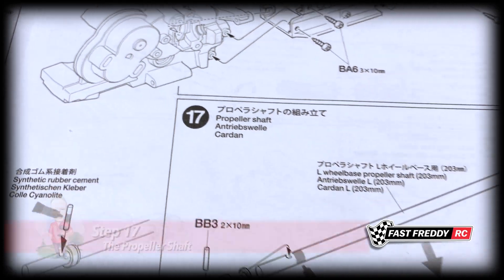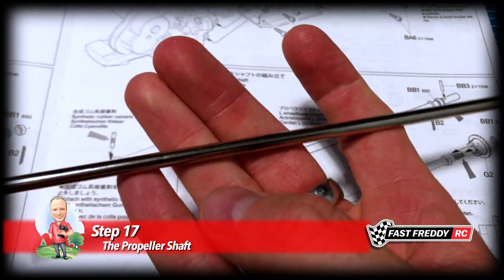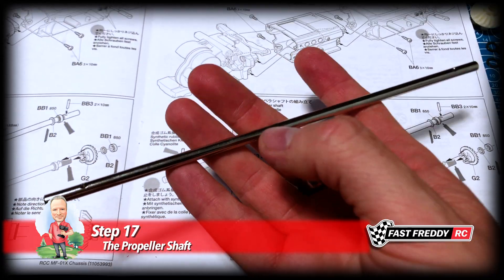So for step 17, the propeller shaft. We need to grab our propeller shaft which is this one here, and like I said it's got a bit of weight to it.